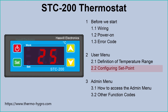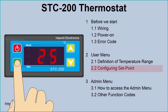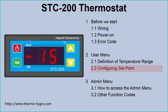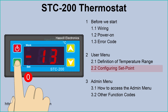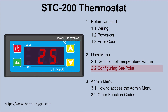Users can quickly change the set point by shortcut keys. Press the set key and the screen will display the existing SP value. Press the up or down key to change the SP value. At last, hold the set key for 3 seconds to save the new data, or leave it alone — the device will automatically save the new parameters and return to the normal state in 30 seconds.